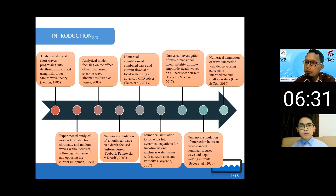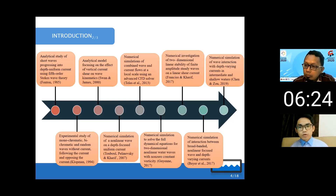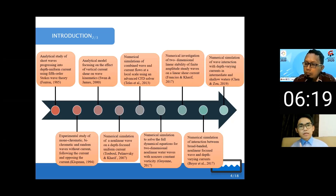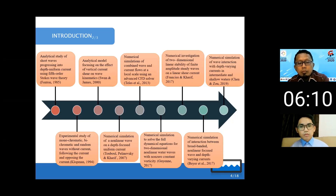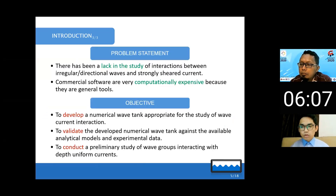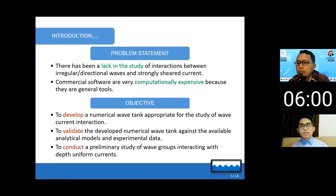Here is a quick literature review. To study wave-current interaction, we have numerical, analytical, and experimental approaches. The experimental approach has its limitations, and numerical and analytical approaches can be difficult to solve for big cases. Another thing observed from this literature review is the lack of study in the field of wave-current interaction.